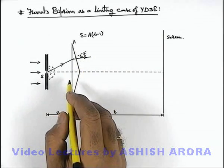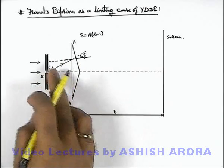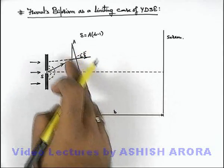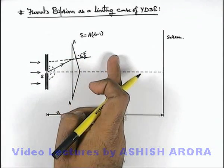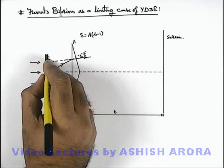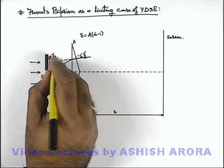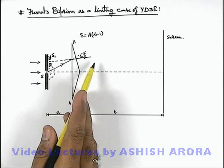In this situation, this light appears to be coming from a point over here. If the prism is observed from the right hand side, it appears that the slit is located at this point. This is the image of slit S1, which can be seen from the right hand side.